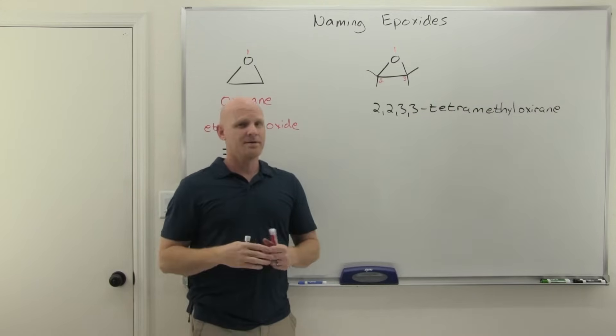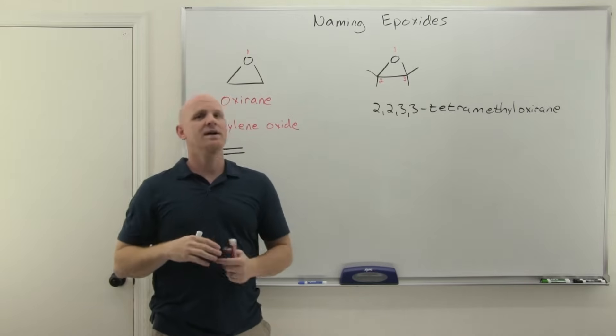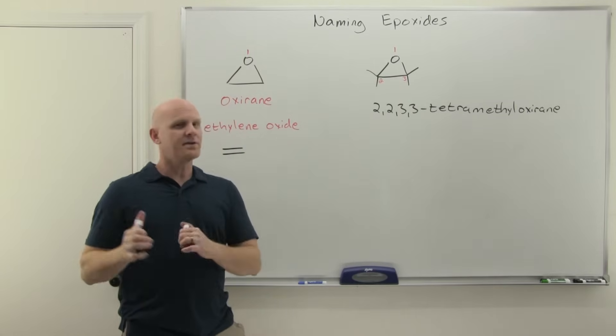And so we're going to say 2,2,3,3-tetramethyloxerane. All right, so that's one way to name it. And again, that's the systematic IUPAC way and one you're probably most likely to encounter.